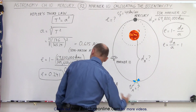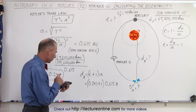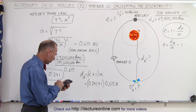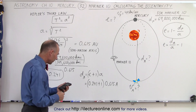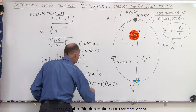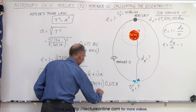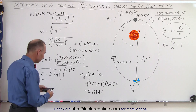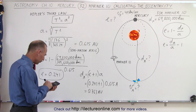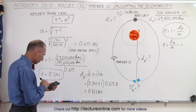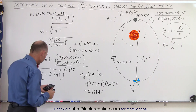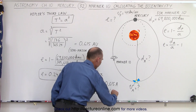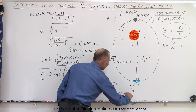Calculating that: 0.241 plus 1, multiplied by 0.615, gives us 0.763 astronomical units — which puts Mariner 10 past the orbit of Venus, which is about 0.7 astronomical units. Multiplying 0.763 by 149,600,000 kilometers gives us a distance of approximately 114 million kilometers away from the Sun.